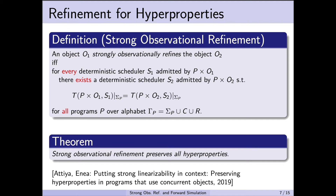With these ideas in place, we can now define refinement for hyperproperties. The notion of refinement we would like is observational refinement, because we would like to refine library objects with respect to a client. Following Atia and Enea, we use strong observational refinement to take the scheduler into account. We say that a concrete object O1 strongly observationally refines the abstract object O2 if and only if, for every deterministic scheduler S1 admitted by the composition p cross O1,